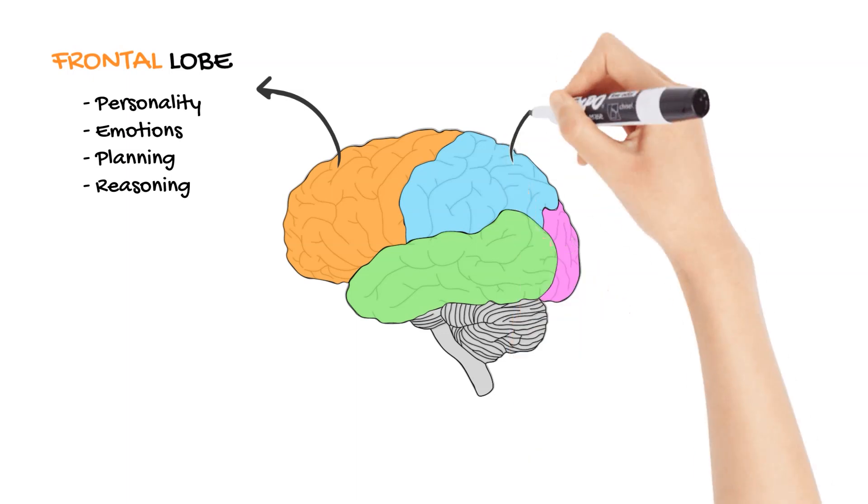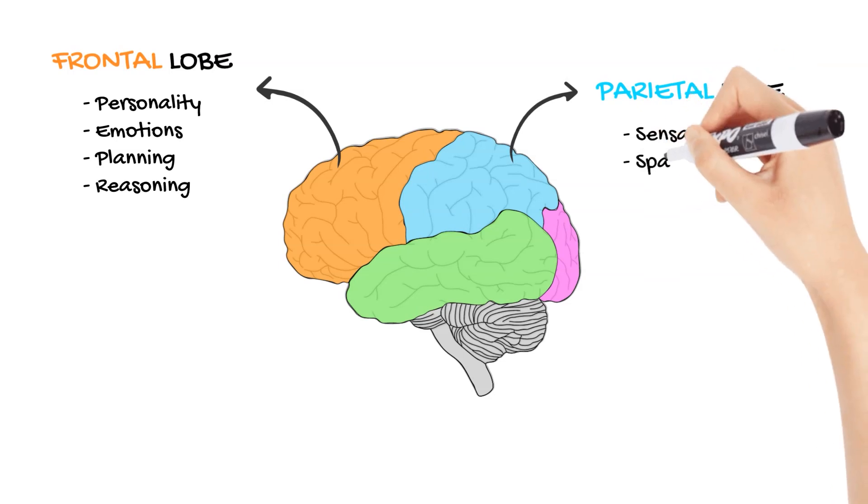The parietal lobe, located at the top of the head, is the brain's sensory hub. It processes and interprets signals from our eyes, ears, and touch receptors, creating a cohesive sense of the world around us. It's also where our spatial reasoning resides, helping us navigate spaces and understand maps.